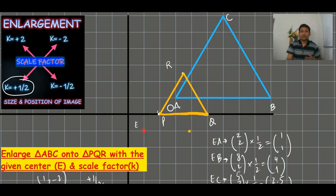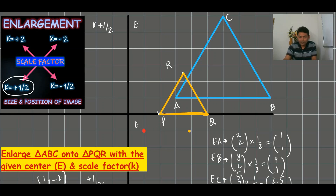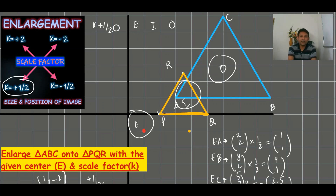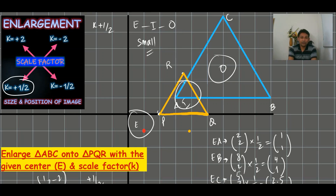What's the conclusion when K is plus one-half? The image is in between the center and the object — the image is the middle position. And the size will be small. The position is very important in enlargement; sometimes the image can be smaller than the object.